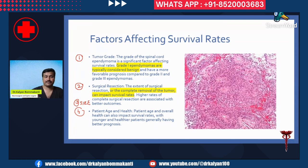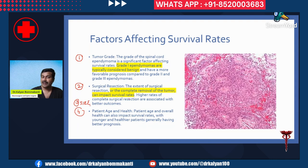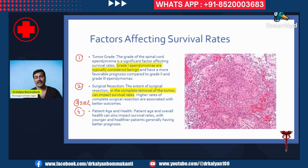How does tumor grade affect the survival rate? The grade of the spinal cord ependymoma is a significant factor. Grade one ependymomas are typically considered benign and have a more favorable prognosis compared to grade two or grade three. Regarding surgical resectability, complete removal of the tumor can impact survival rates — higher rates of complete surgical resection are associated with better outcomes. Patient age and overall health also impact survival, with younger and healthier patients generally having a better prognosis. Smaller tumors are easier to excise completely, while tumors spanning a larger segment of the spinal cord typically have a worse outcome.